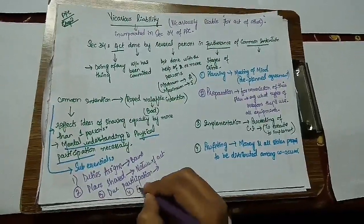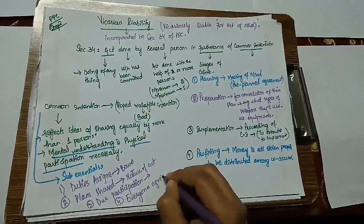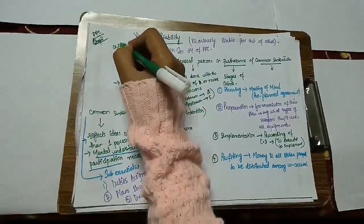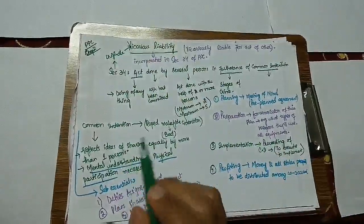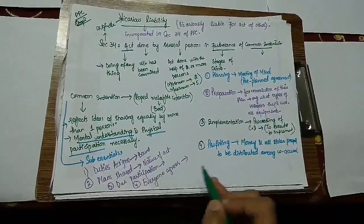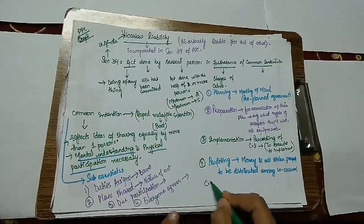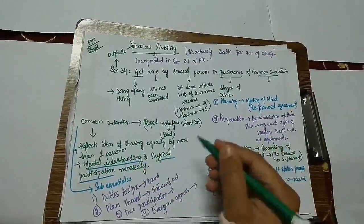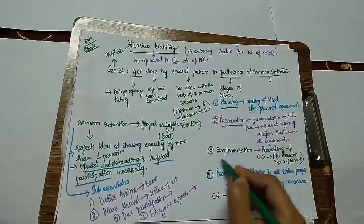And number four, everyone agrees on this plan. Every person listens to that plan and agrees to it. So this is all about vicarious liability which is incorporated in section 34. Here criminal liability is determined due to...